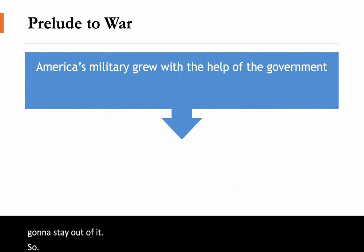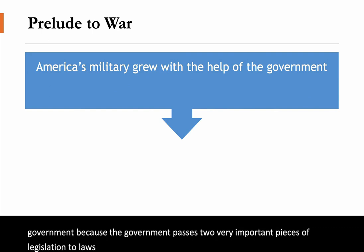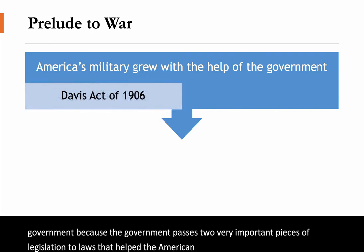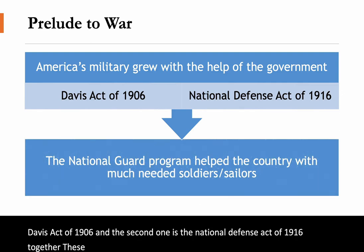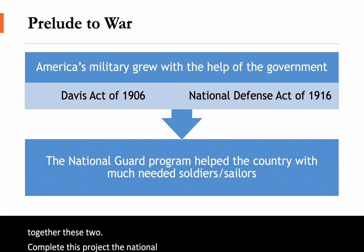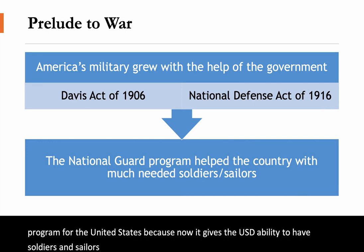As America's military began to grow with help from the U.S. government, two very important pieces of legislation were passed. The first is the Davis Act of 1906, and the second is the National Defense Act of 1916. Together, these two completed the National Guard Program, a very important program that gave the U.S. the ability to have soldiers and sailors ready to go in case of war.